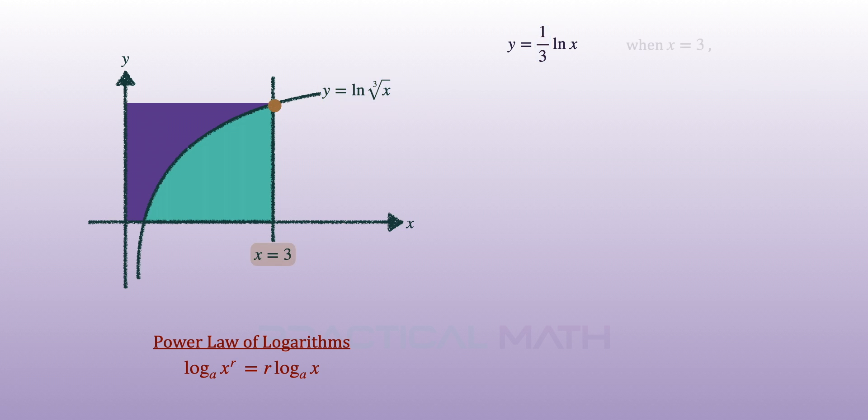Next, let's find the coordinates of the intersection point between the curve and x equals to 3. Replacing x equals to 3 into the simplified equation, we will get the y coordinates.